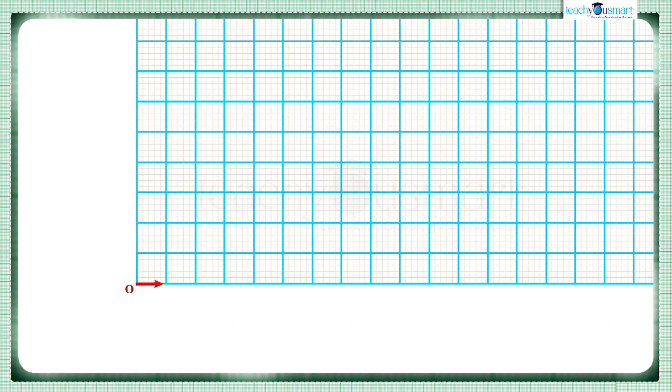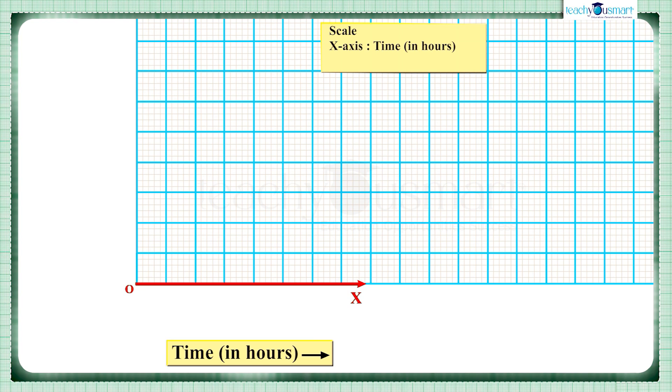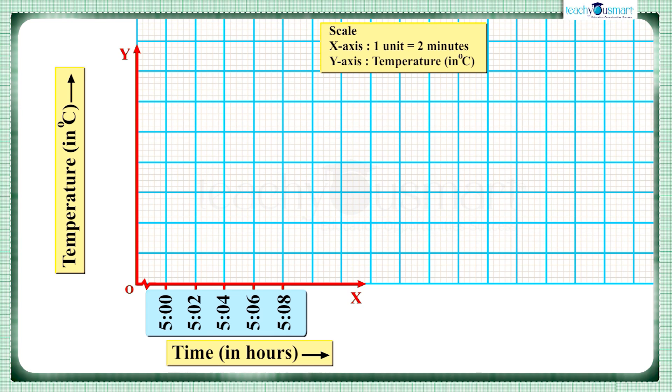Here we represent time in hours on the x-axis and temperature in degrees Celsius on the y-axis. Let us assume that one unit on x-axis represents two minutes and one unit on y-axis represents 20 degrees Celsius.